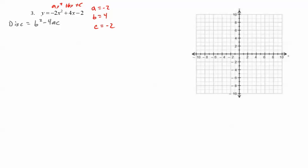We'll have 4 squared minus 4 times a times c. 4 squared is 16. I've got negative 4 times negative 2, which is positive 8. Then 8 times negative 2 is negative 16. I do 16 minus 16, and I've got 0. So the discriminant equals 0. Now what does that mean? That means there is only one x-intercept.